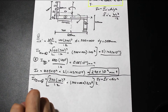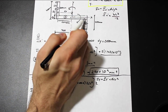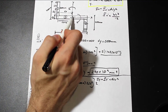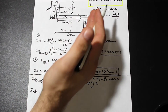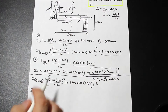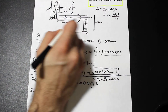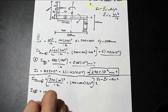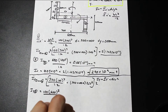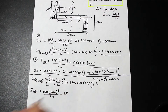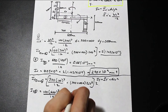Now let's find Iy for shape three. Once again, the centroid of the shape is the same as the centroid of the entire section, so we calculate this directly with no parallel axis theorem. For the y direction, our height — perpendicular to y — is 600, and our base is 100. So we have 100 × 600³/12, which gives us 1.8 × 10⁹ mm⁴.